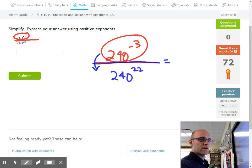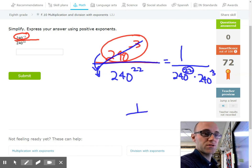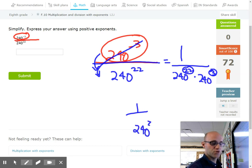So if we rewrote this, we would say we have 240 to the 22nd. It's staying there. On the top of the fraction, nothing's going to be left. These are going to get moved down to the bottom. So we're going to have 240 to the positive 3. And now we just simplify things. Can you imagine 22 of these 240s times three more of them? How many of them would you have? Wouldn't you have? Let's see. 22 plus three, you'd have about 25 of those. So you'd say I have 240 to the 25th power.